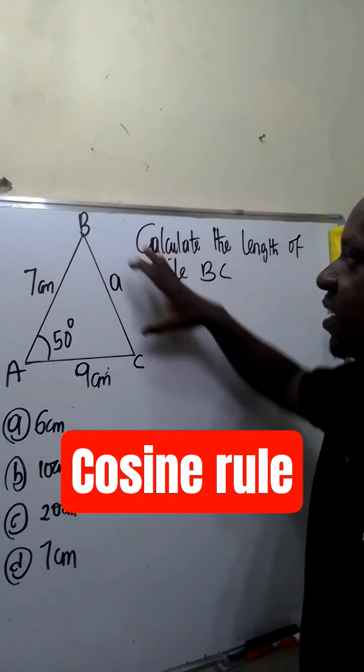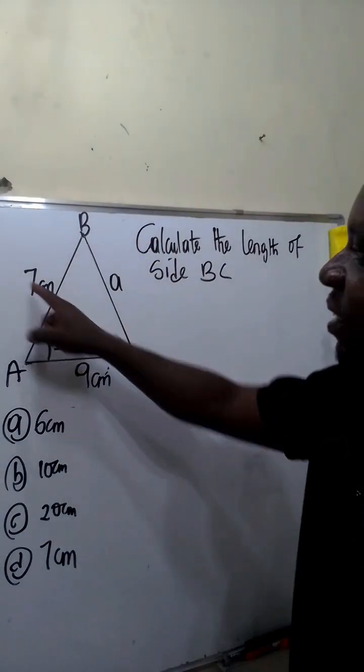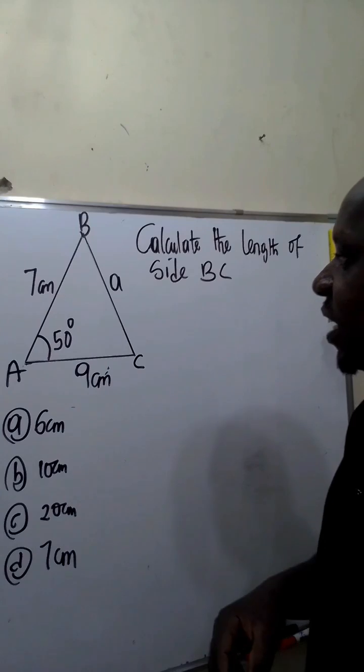Calculate the length BC of this triangle. This triangle consists of two sides, 7cm and 9cm, with one included angle.